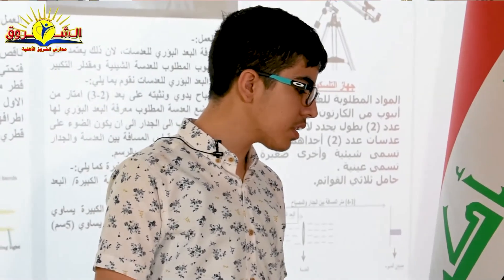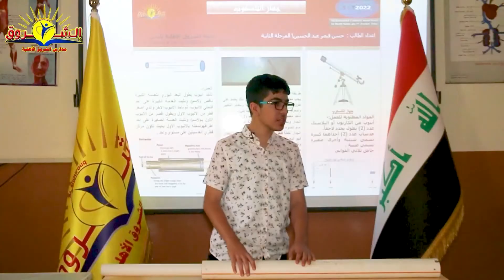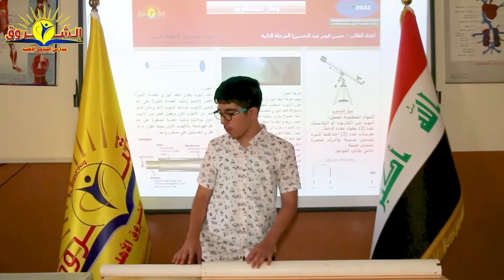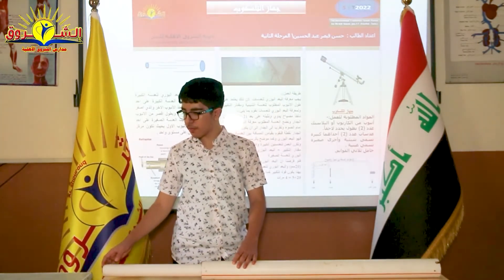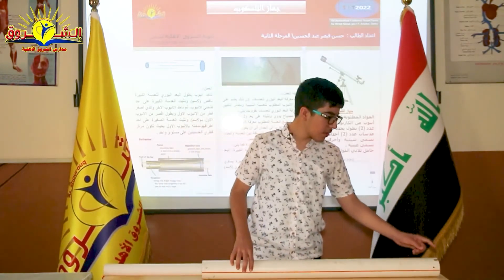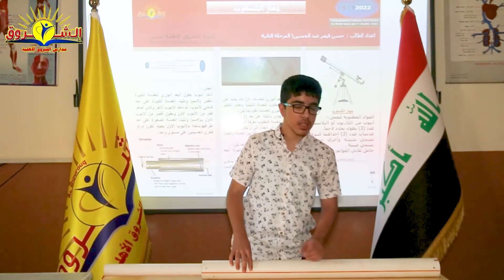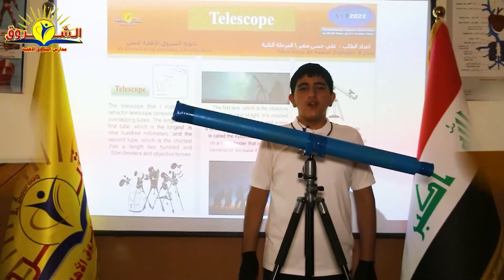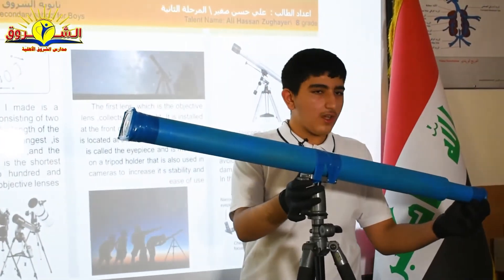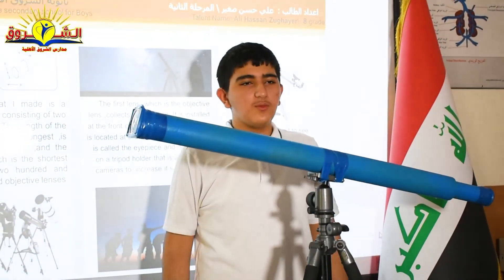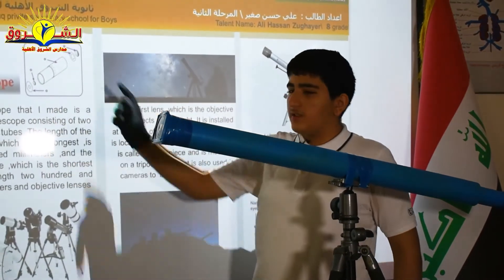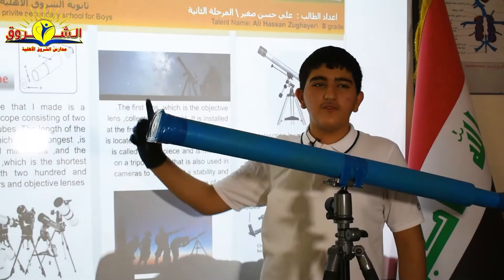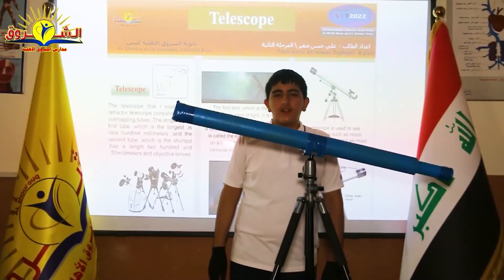We are going to measure the magnification — how many times does it magnify. We are going to take the focal length of the eyepiece and the focal length of the objective and divide them. The tube, which is the shortest, has a range of 250 millimeters, and two convex lenses. The first lens, which is the objective lens, collects the ray of light and locates it at the front of the telescope.